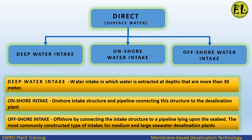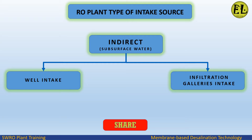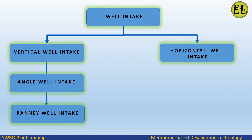Indirect subsurface intakes are classified into two main groups: well intakes and infiltration gallery intakes. Well intakes can be further subdivided into vertical wells, angle wells, radial collector wells, and horizontal wells.